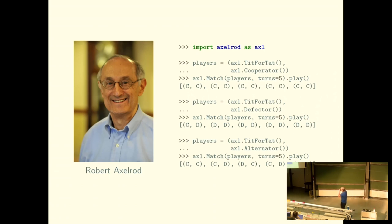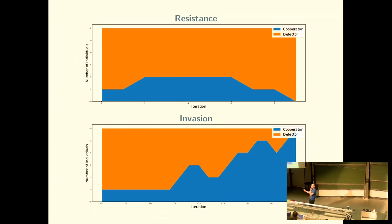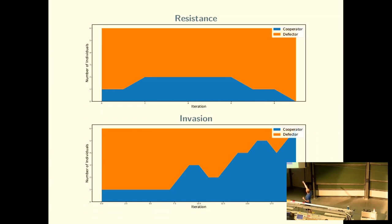For example, we can create Tit-for-Tat as a strategy and have it play against Cooperator for five turns — they both cooperate throughout. Tit-for-Tat versus Defector: Tit-for-Tat starts cooperating, Defector defects, and then Tit-for-Tat matches it and starts defecting. The Axelrod Library has lots of plotting and Moran process capabilities. If we start with a population of defectors and throw in one cooperator, over time the cooperator gets pushed back out — defectors resist invasion. But the opposite is also possible, and that's what we're interested in: why do we evolve cooperative behavior?